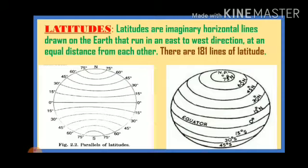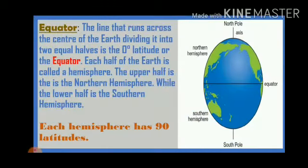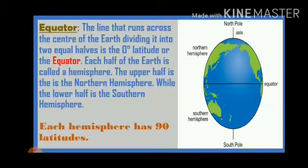There are 181 lines of latitude in total — this is very important. One line at the center of the earth divides the earth into two halves. It is known as the equator, or zero degree latitude. The line that runs across the center of the earth dividing it into two equal halves is the zero degree latitude, or the equator.